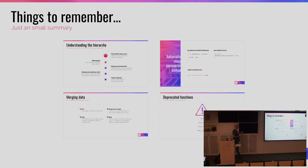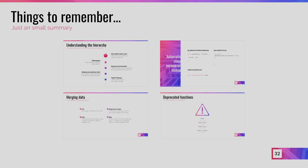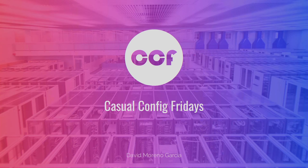To summarize: understand what Hiera is and how our global-layer hierarchy works. Use automatic class parameter lookup — it's cleaner, easier, and you don't have to remember variable names since they're fully qualified. You have different strategies to collect data from across the hierarchy. Most importantly, get rid of the deprecated functions — start with 'hiera_hash'. The next CCF session will be on October 12th. Thank you, and if you have any questions, I'm happy to answer.